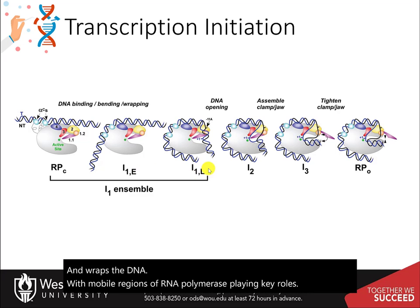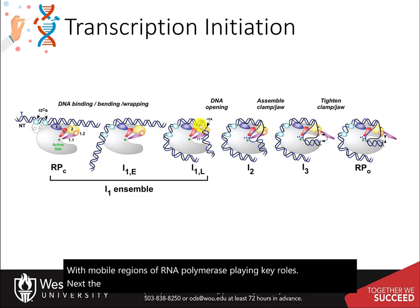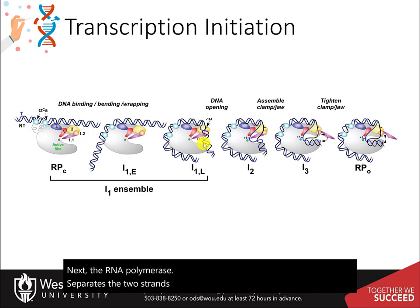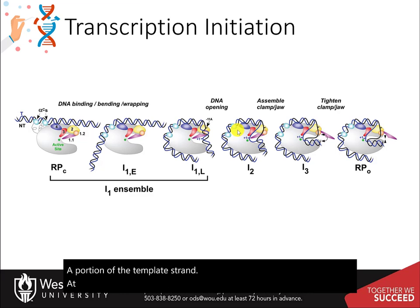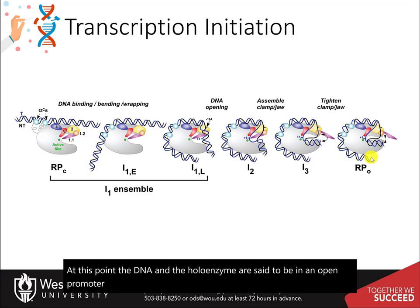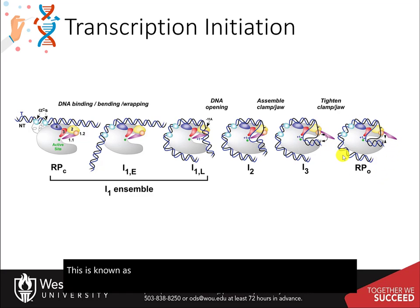Next, the RNA polymerase separates the two strands of DNA and exposes a portion of the template strand. At this point, the DNA and the holoenzyme are said to be in an open promoter complex. This is known as the transcription bubble.